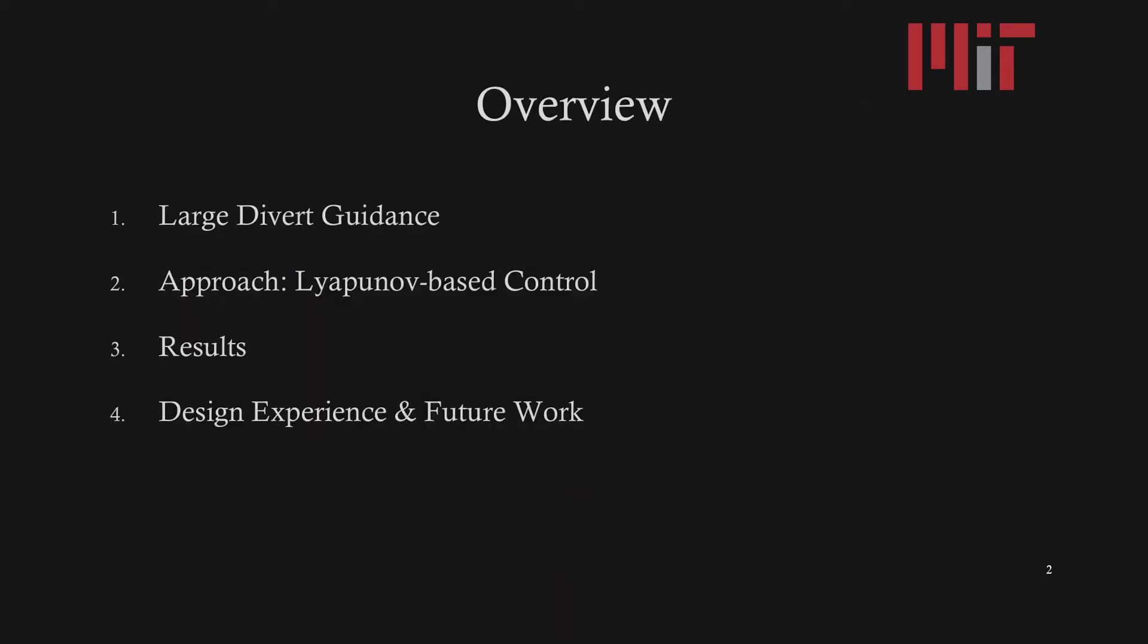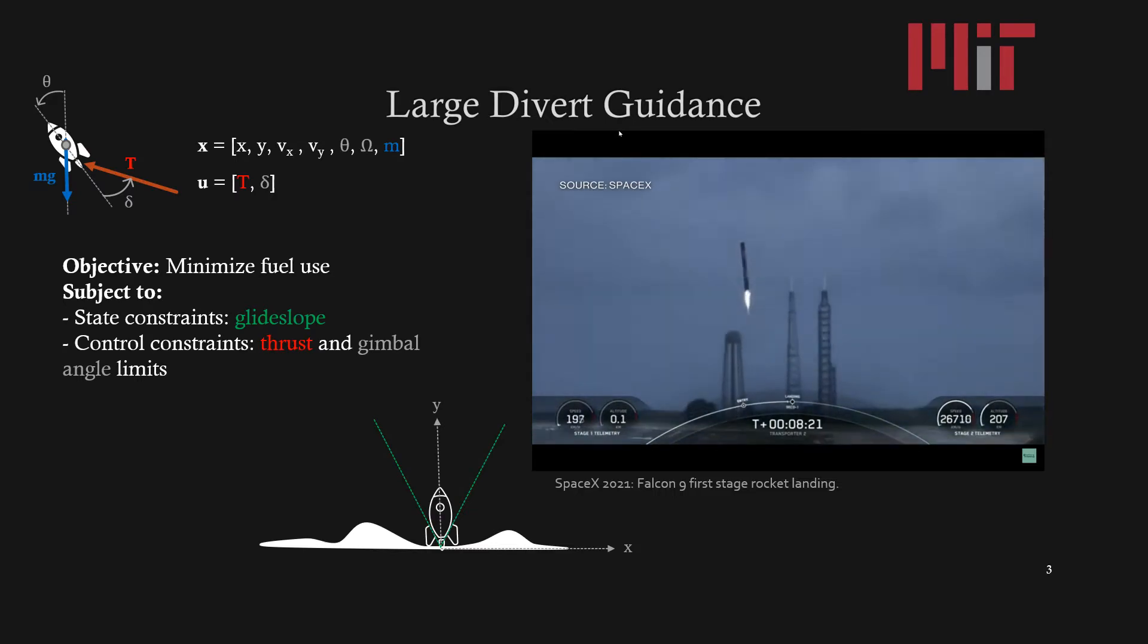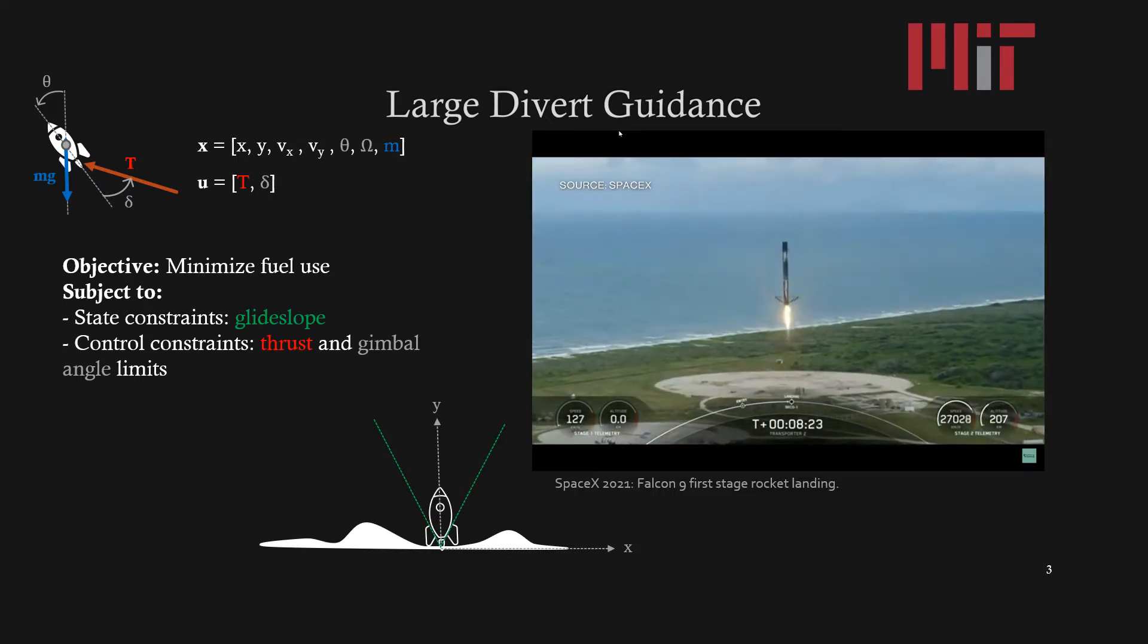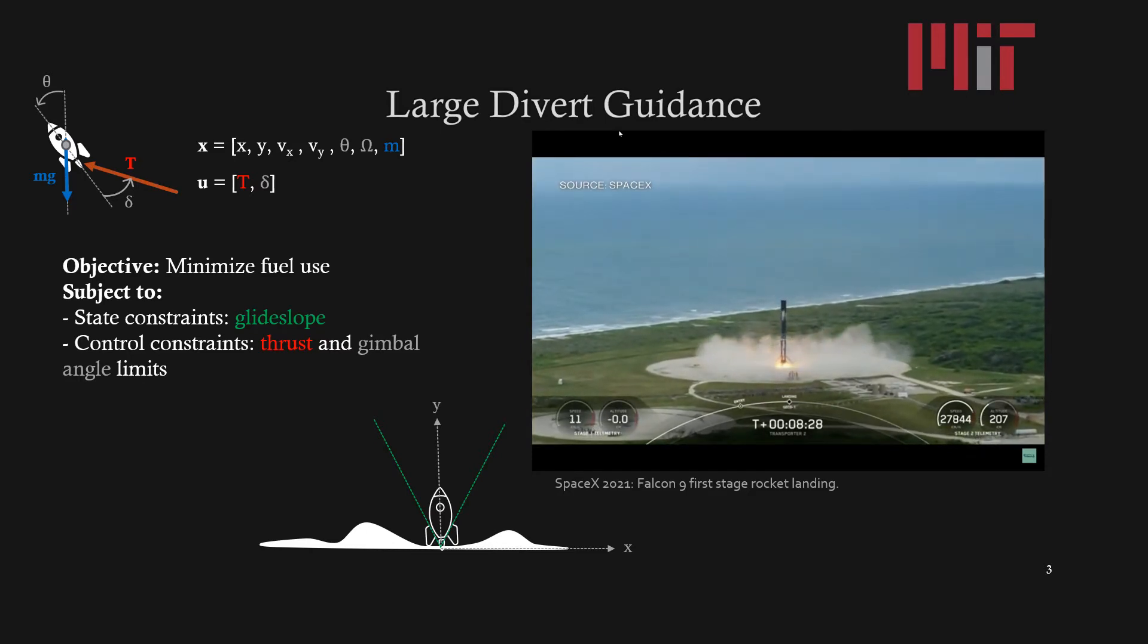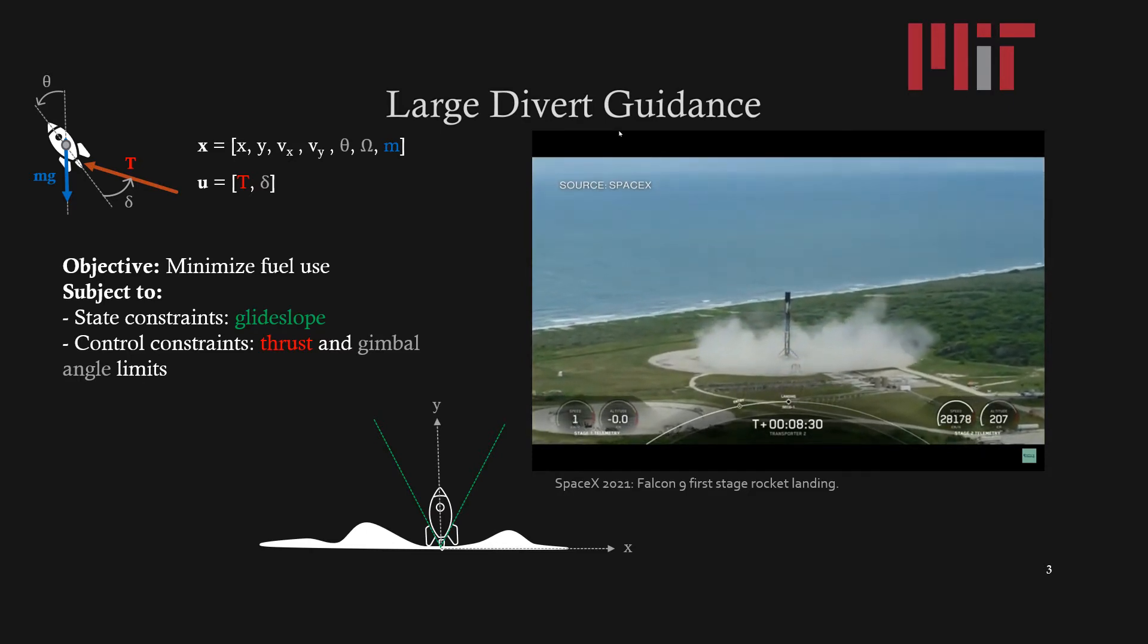Here's an overview of what I'll be talking about. My goal for this project is to implement large divert guidance where the objective is to minimize fuel usage subject to a list of state constraints and control constraints.